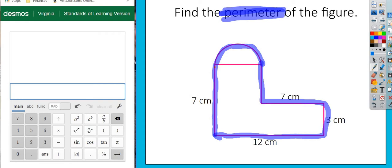We know this side is 7. We know this is 12. We know a 3. We know another 7, but we need to find this one here.